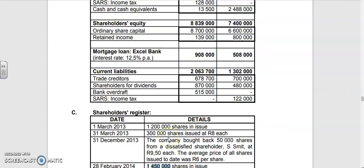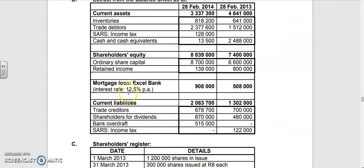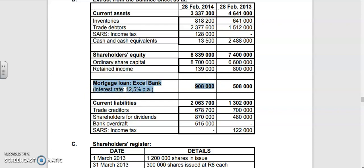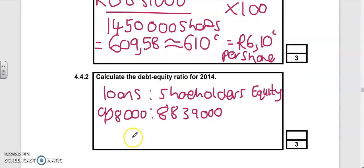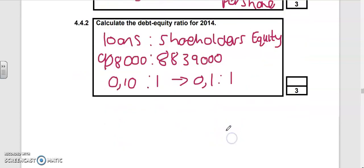We check the extract from the balance sheet. The loans are nine hundred and eight thousand. Debt-equity tells us the degree of financial risk. Anything below 0.4 or 0.5 is low risk. When I divide I get 0.1 is to 1. It's always advisable to have ratios at one decimal place.